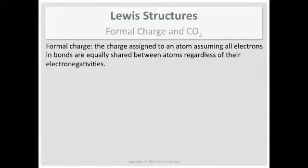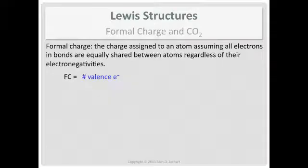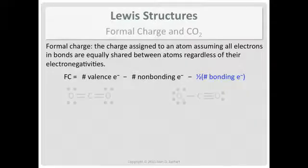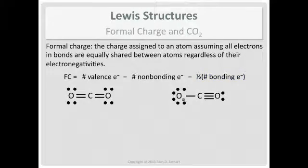To calculate the formal charge for an atom, you need a formula. The formal charge equals: the number of valence electrons the atom has, minus the number of non-bonding (lone pair) electrons around that atom, minus half the number of bonding electrons it shares with other atoms. You apply this formula to every atom in the chemical species.